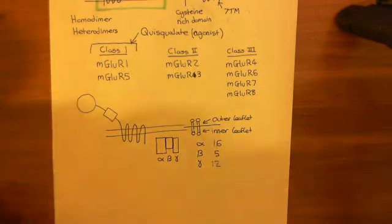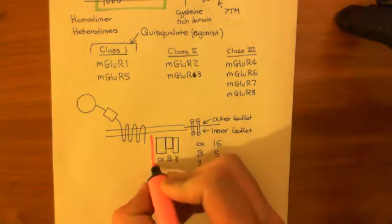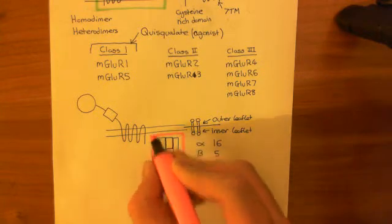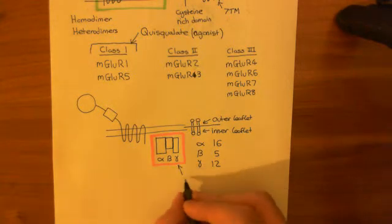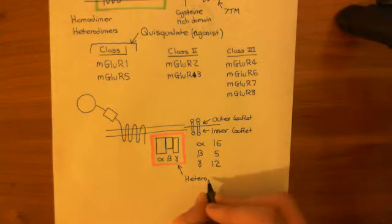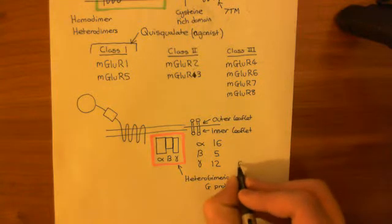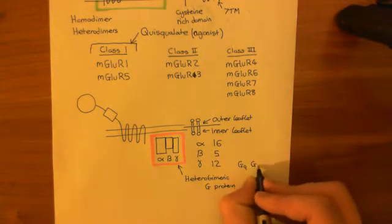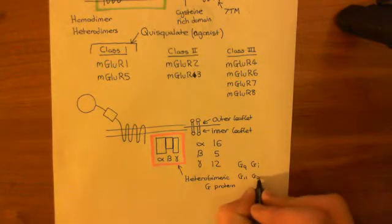The entire combination of the three subunits is what is known as the heterotrimeric G protein. Often people will write, when they write G proteins, things like GQ, or GI, or G11, or GO.